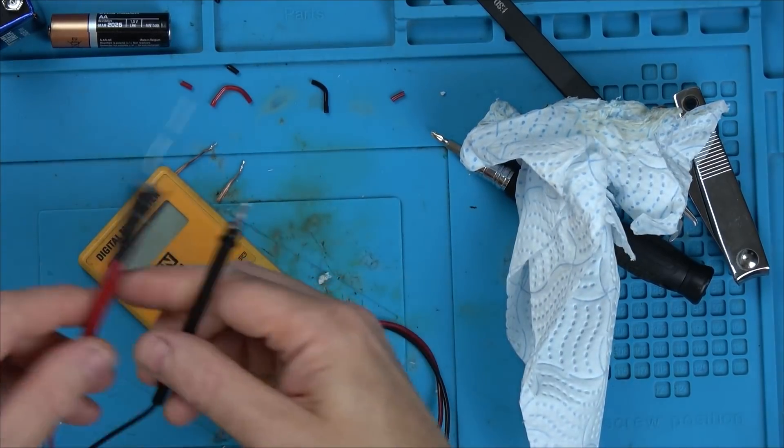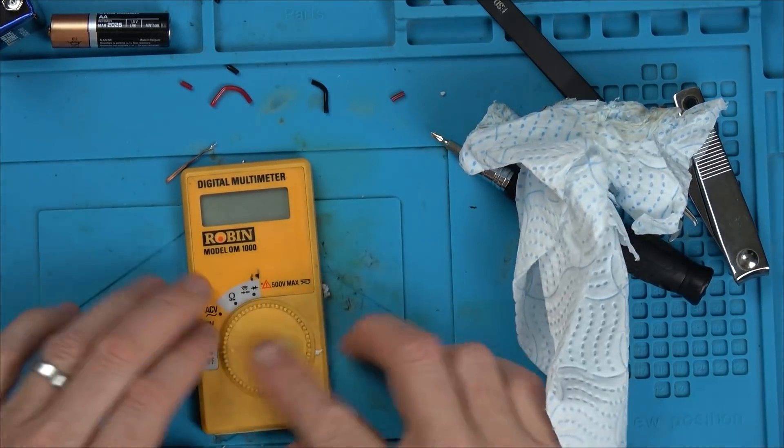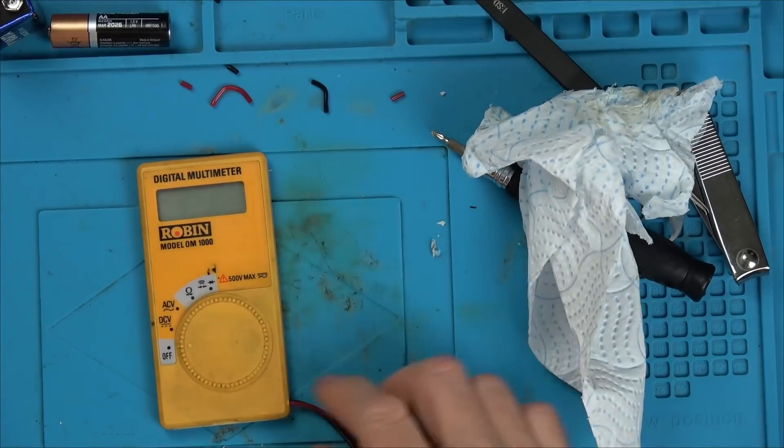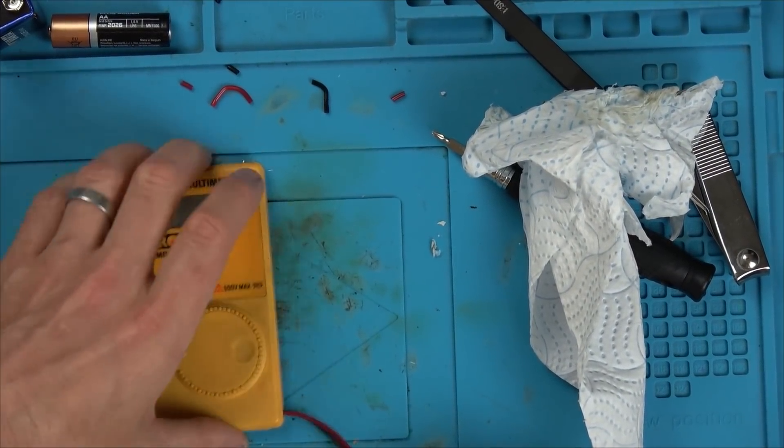So obviously with these leads here you wouldn't use it for AC anymore. But for ohms, continuity and low voltage DC, then that's fine. Well, I'm going to get a magic eraser and see if I can clean up this kind of more textured bit.